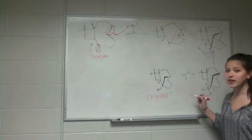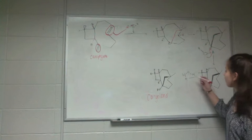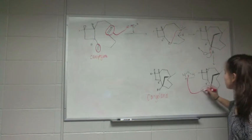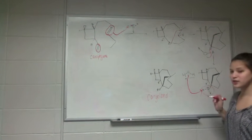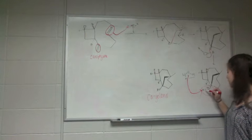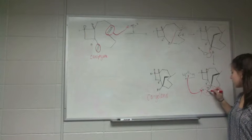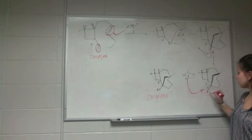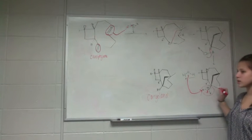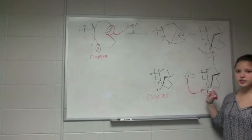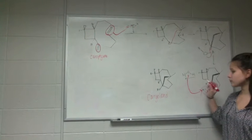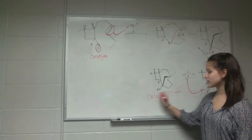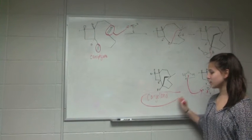In the last step, a water molecule attacks and deprotonates this hydrogen, and the electrons from the hydrogen-oxygen bond are transferred to the oxygen because it is more electronegative. This yields our first product, caryophyllenol.